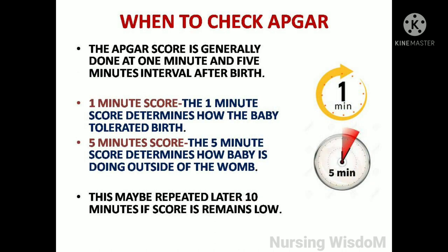The APGAR score is generally assessed at one minute and five minutes after birth. The one-minute score determines how the baby tolerated birth, while the five-minute score determines how the baby is doing outside of the womb. This may be repeated at 10 minutes if the score remains low.